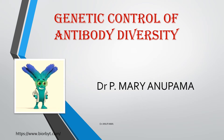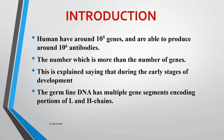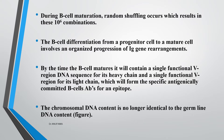Hello viewers, this is Dr. P. Maryan Puma. Today let us study about genetic control of antibody diversity. What is antibody diversity? We humans have around 10 to the power of 5 genes, but we have the capacity of producing around 10 to the power of 6 different types of antibodies. The number of antibodies we can produce is more than the number of genes. This is explained by saying that during early stages of development we have germline DNA which has multiple gene segments encoding portions of both light chain and heavy chain, and during B cell maturation random shuffling occurs resulting in 10 to the power of 6 combinations.